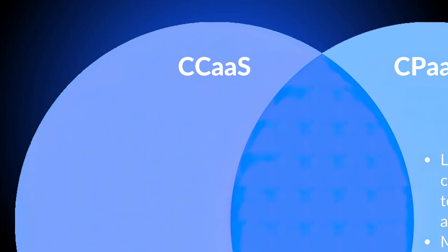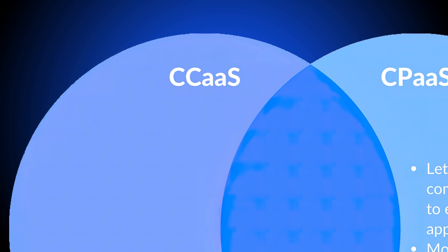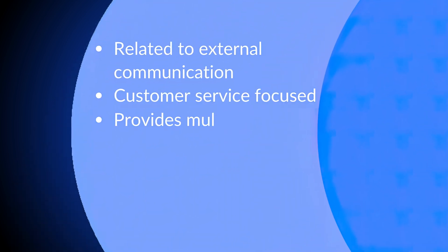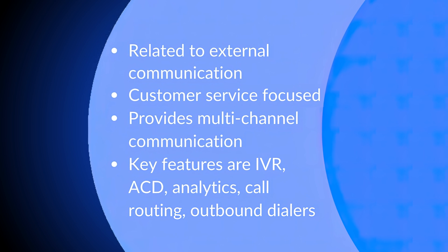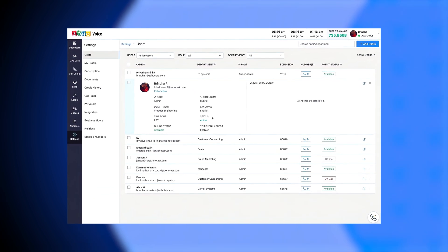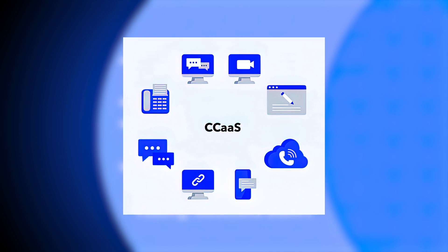On the other hand, a CCaaS solution doesn't just provide a communication function — it provides an entire contact center solution with a suite of channels, features, and tools. You subscribe to a complete application hosted and owned by the service provider. As a result, CCaaS solutions have less flexibility, less control, and less ownership, but quicker installation and wider functionality compared to CPaaS APIs.